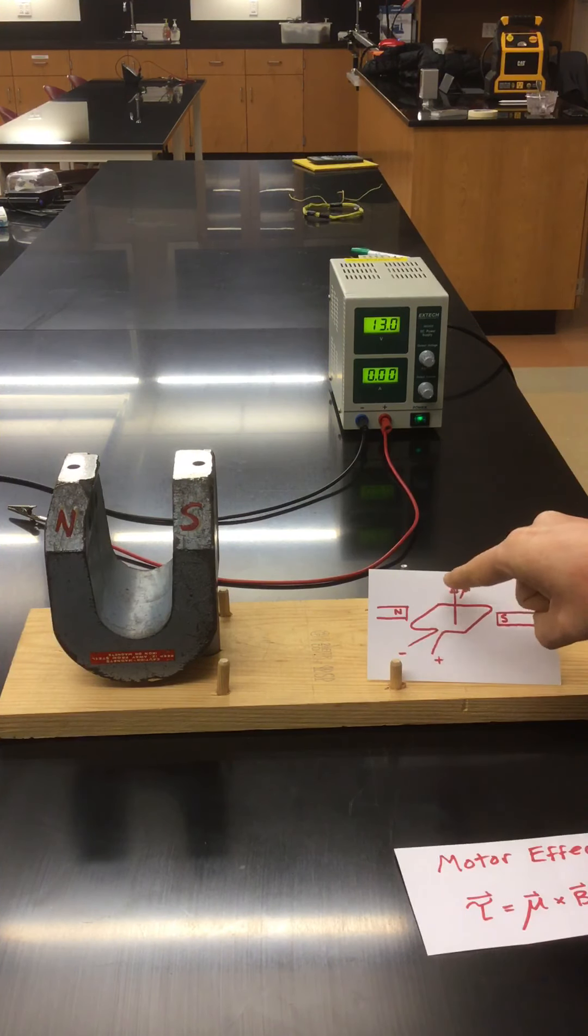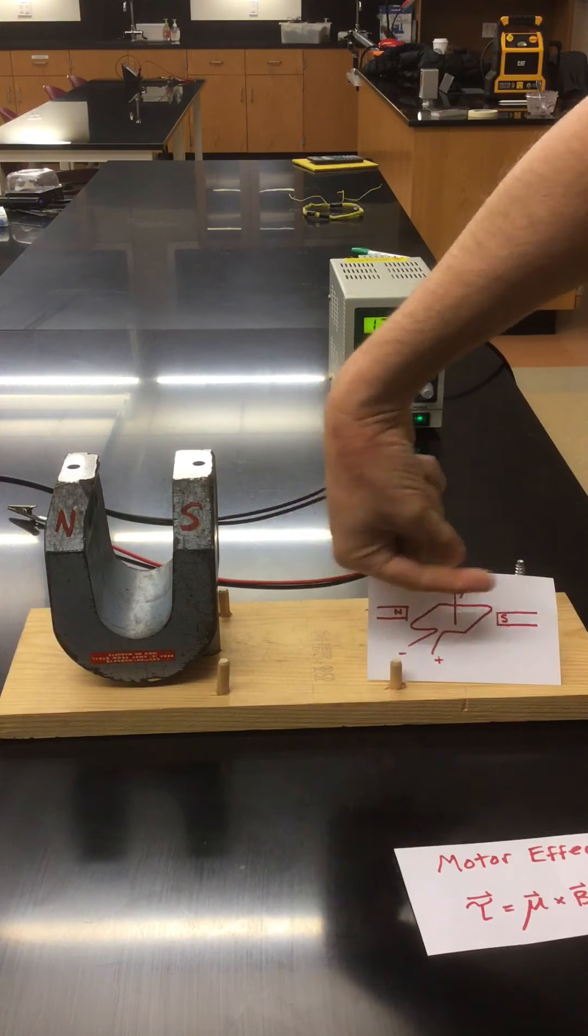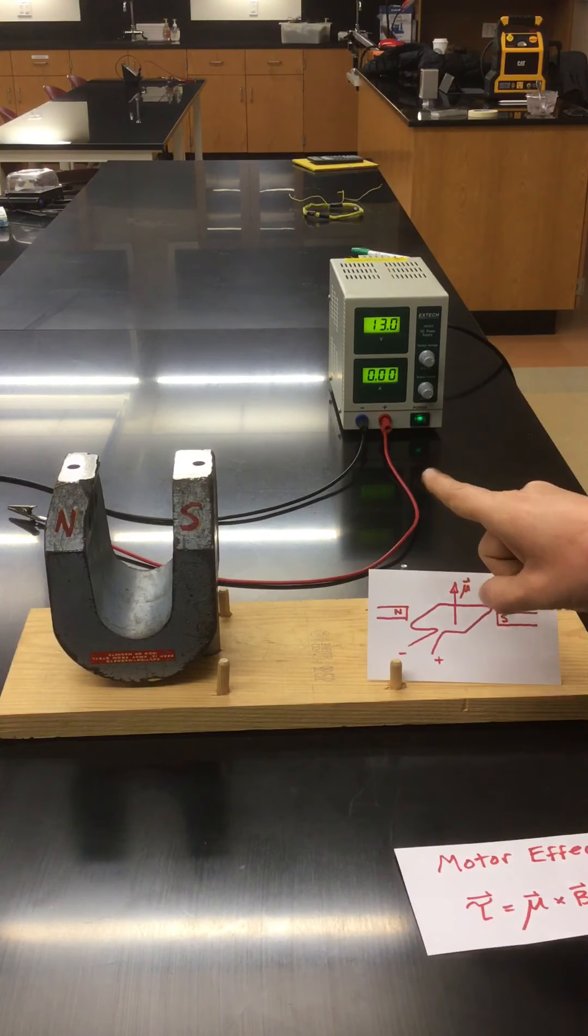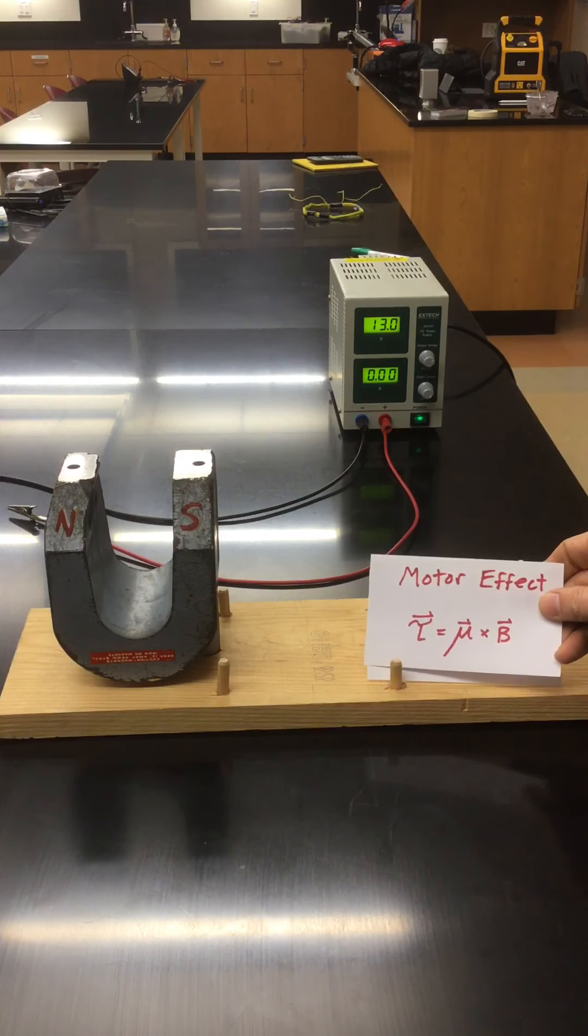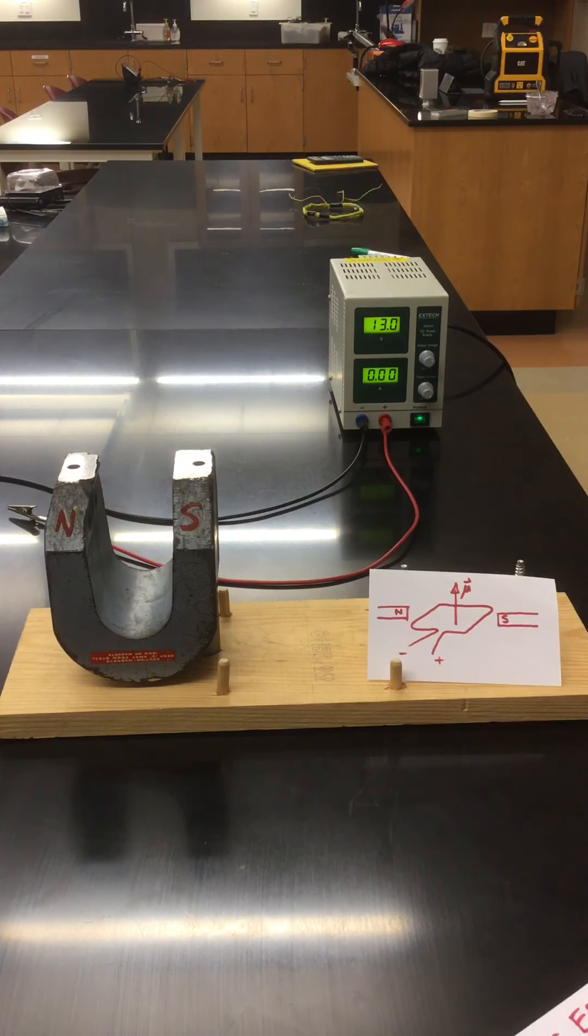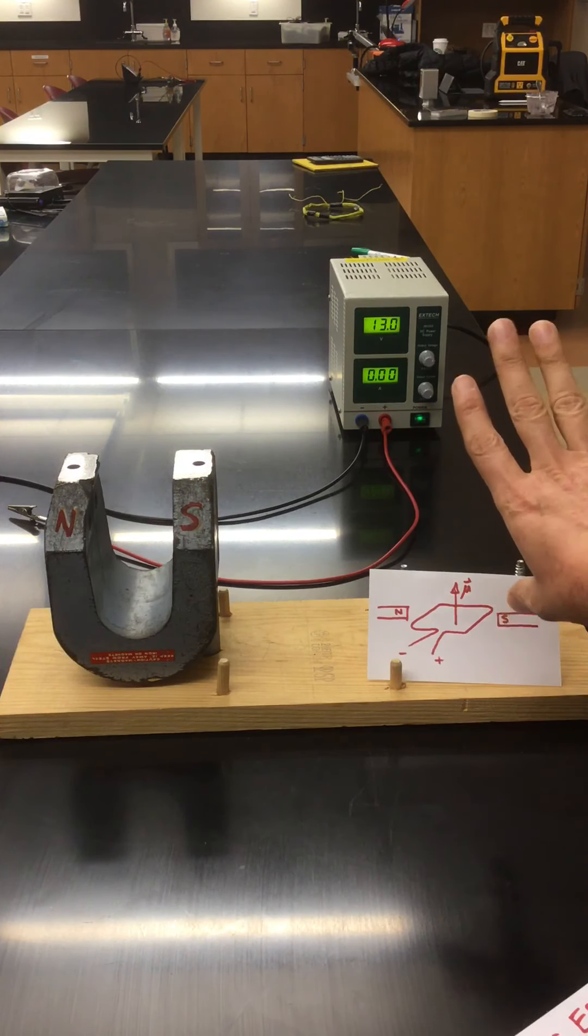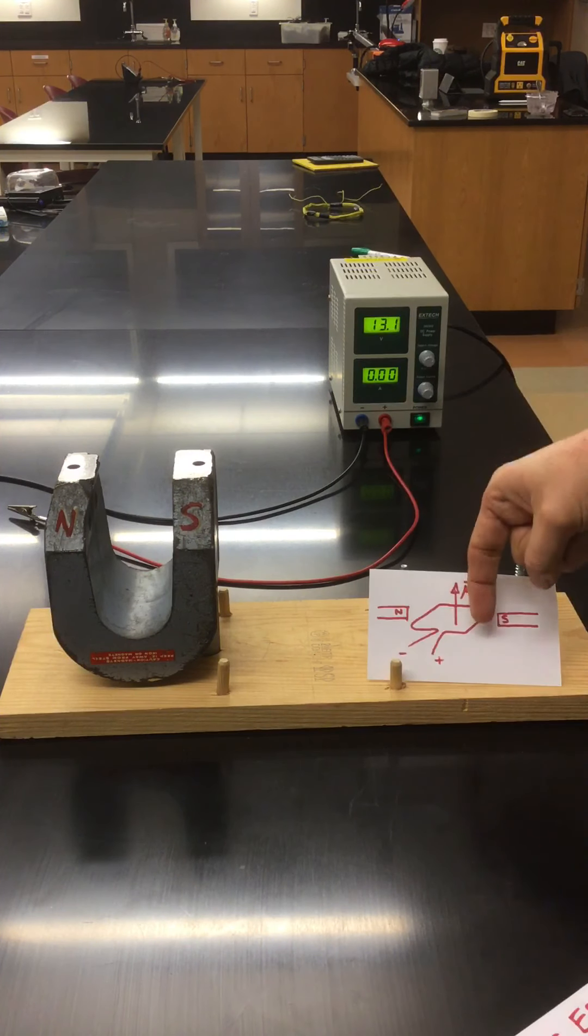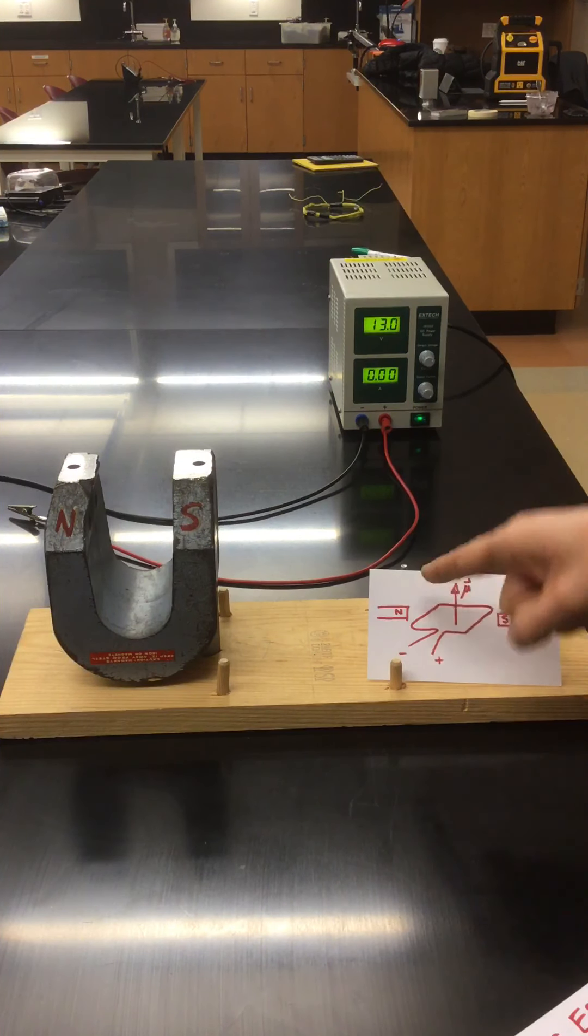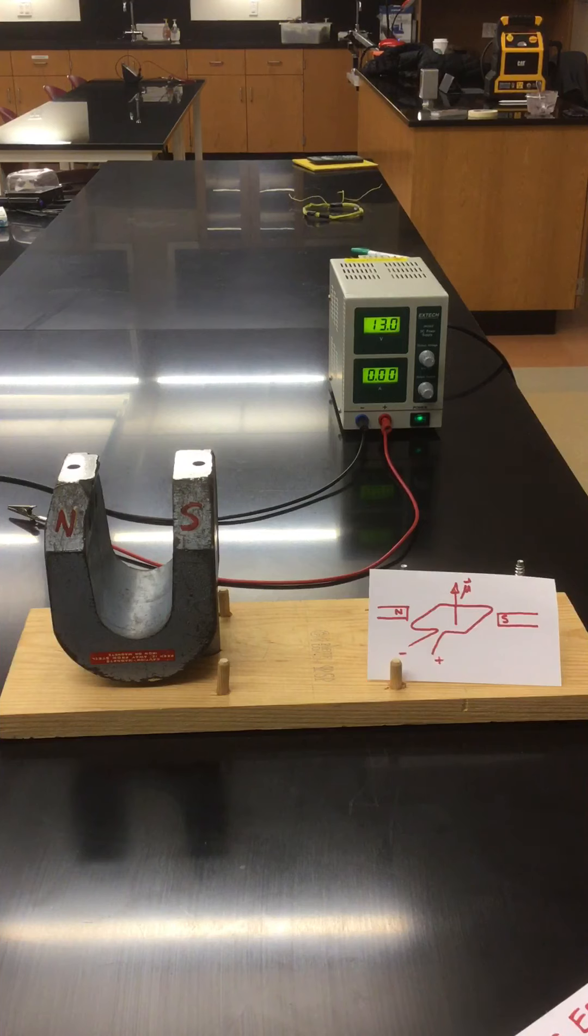So take the vector cross product, not of B crossed into mu, but rather the product of mu crossed into B. So if mu is crossed into B, we would get rotation in that direction. Same thing we would get if this side of the wire is forced down while this side is forced up. So this is why magnetic fields are able to exert torque on a current loop.